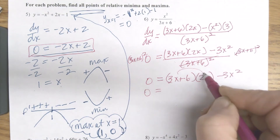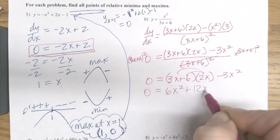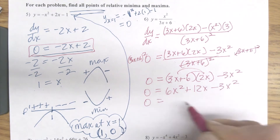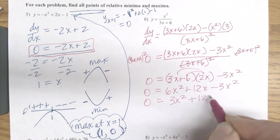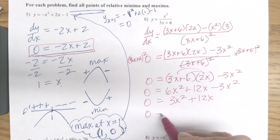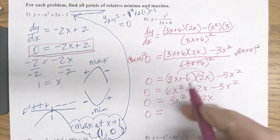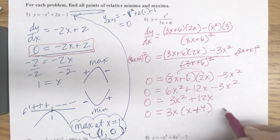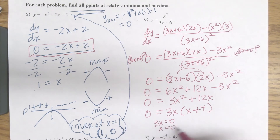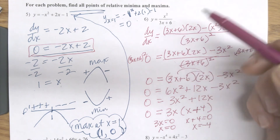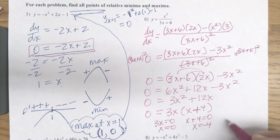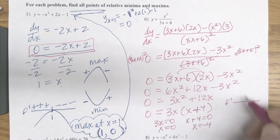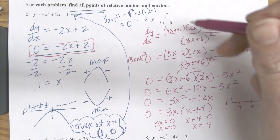I distribute that through to get 6x squared plus 12x minus 3x squared, which simplifies to 3x squared plus 12x. I set this equal to 0 and factor to solve since I've got a squared term. I pull out a 3x, which leaves x plus 4. Setting both factors equal to 0: 3x equals 0 when x is 0, and x plus 4 equals 0 when x is negative 4. That must mean in this graph I have a min and a max. I'll do my f prime chart at those two points.